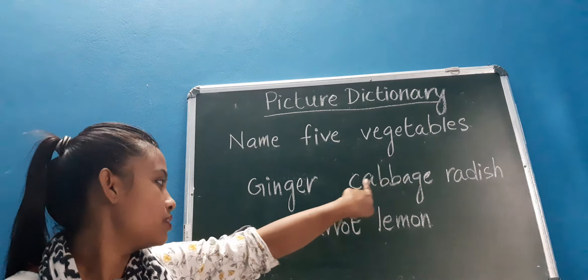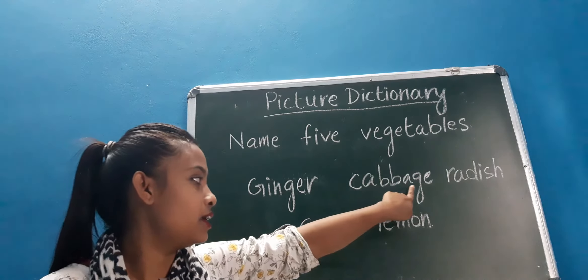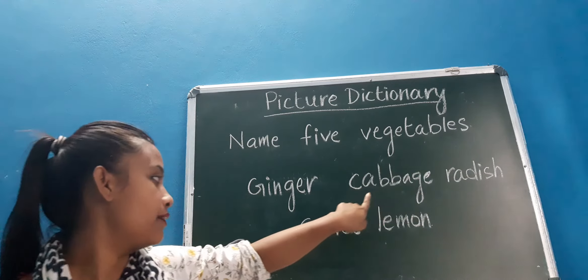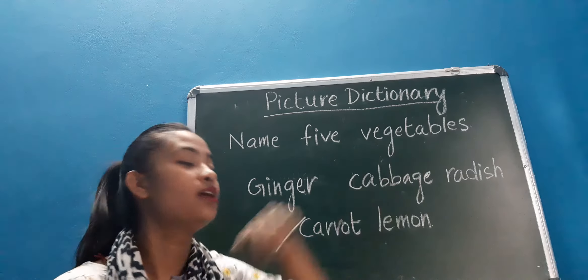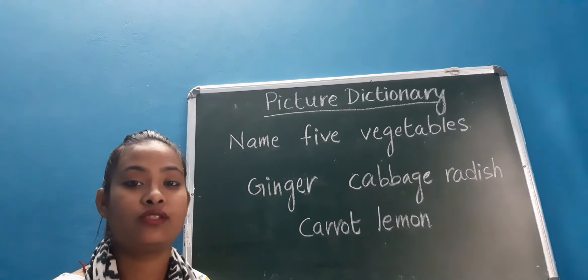Next is cabbage. C A B B A G E, cabbage. I repeat, C A B B A G E, cabbage. Cabbage is round.